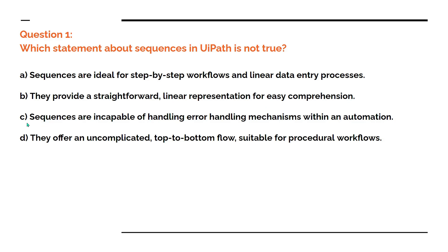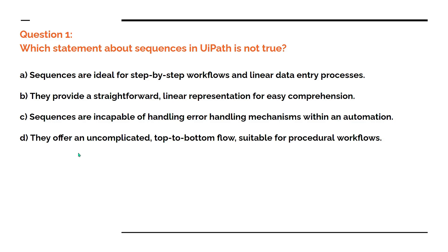Option C: sequences are incapable of handling error handling mechanisms within an automation. Option D: they offer an uncomplicated top-to-bottom flow suitable for procedural workflows. Take your time — please pause the video and comment your answer.